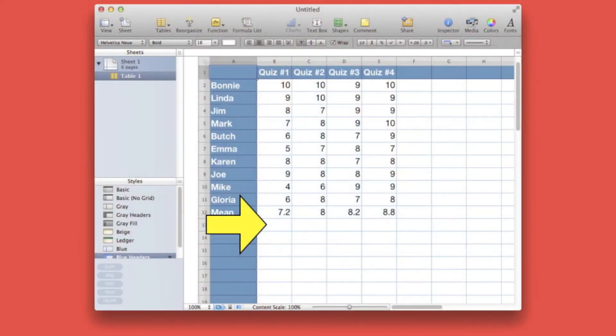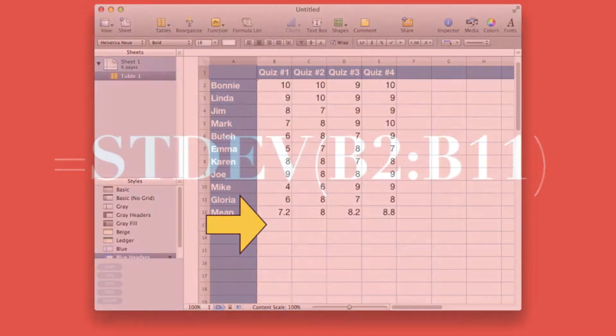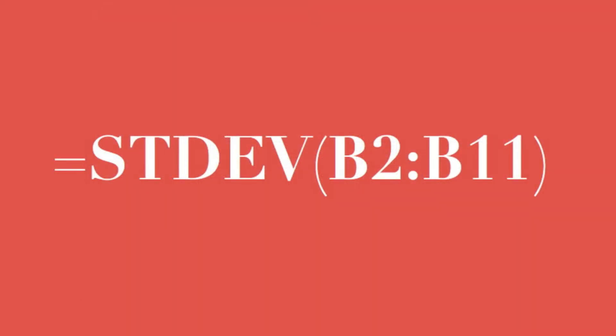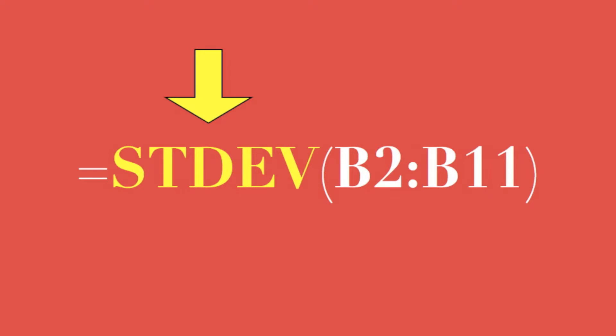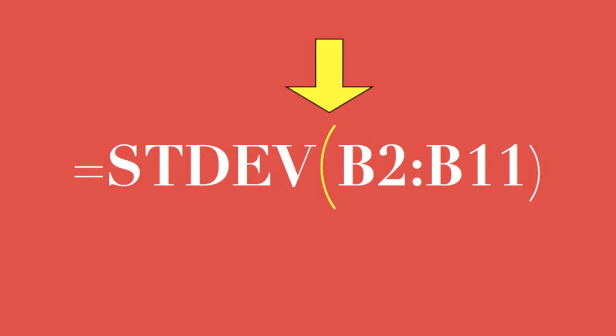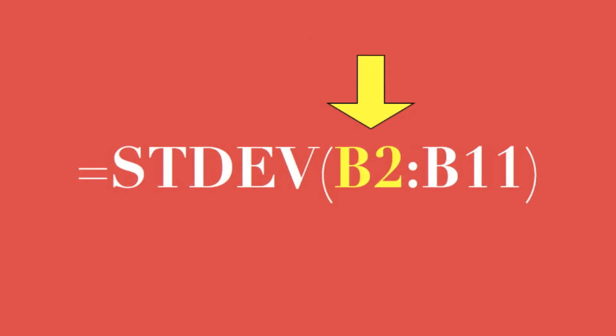Now we'll put our function at cell B12. This is our standard deviation function. It begins with the equal sign and the function name STDEV. We then specify the range of values within parentheses. Our range begins at cell B2 and ends at cell B11.